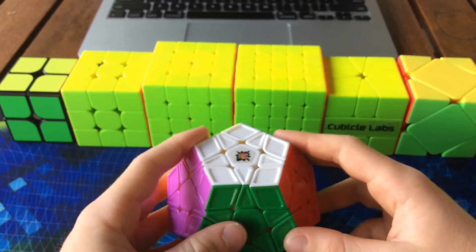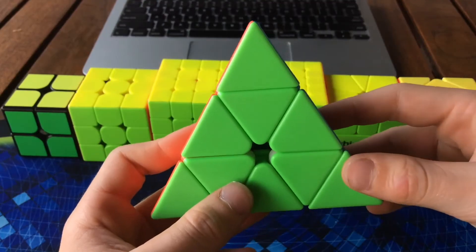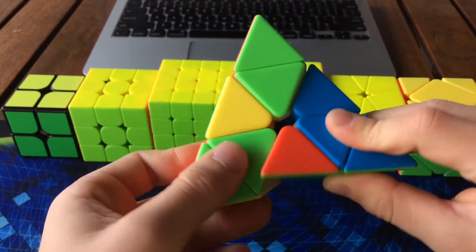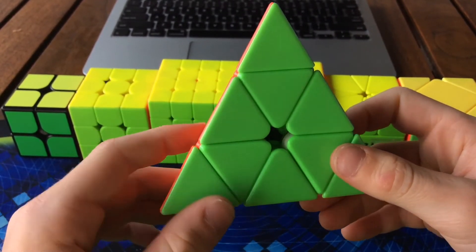For pyraminx, I'm using the Moyu magnetic pyraminx. My goal for it is to just get a sub 10 average and a sub 9 single.